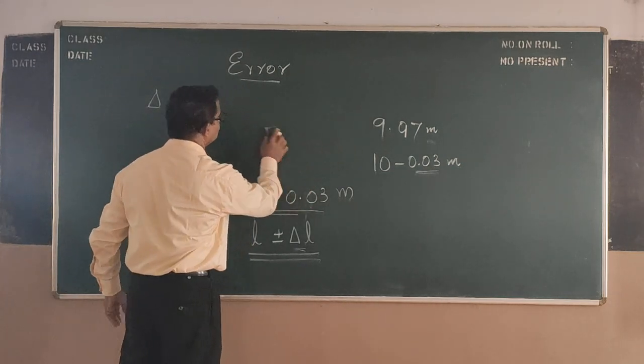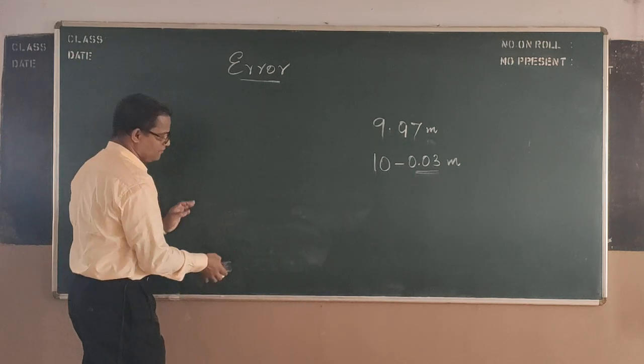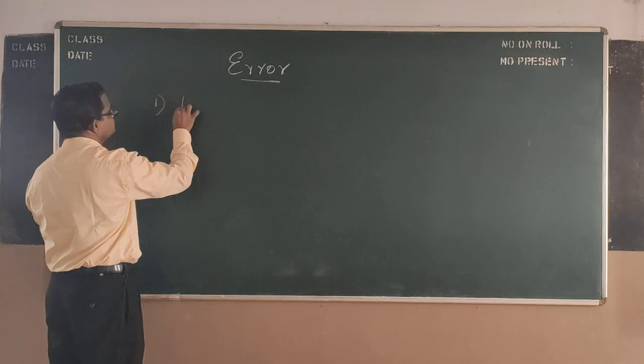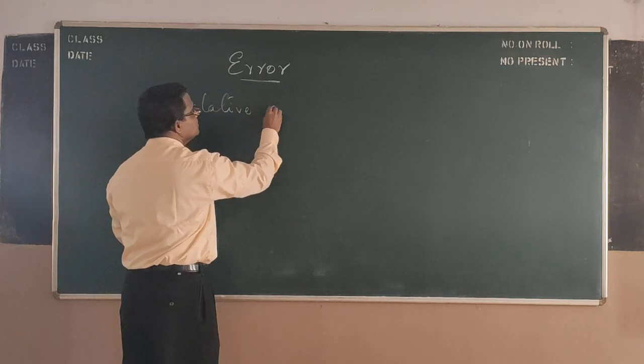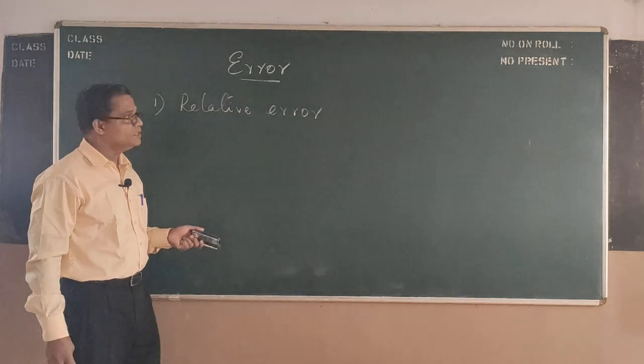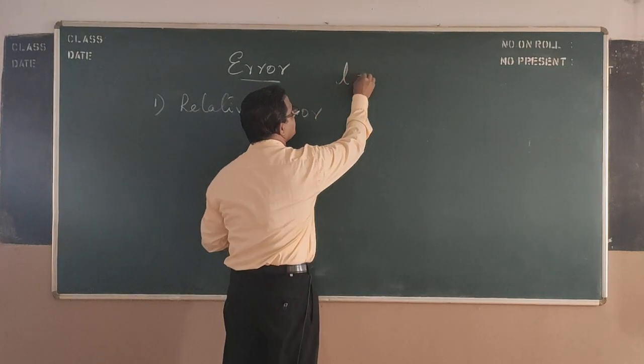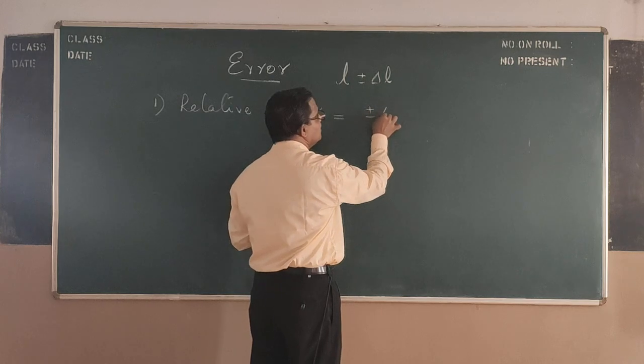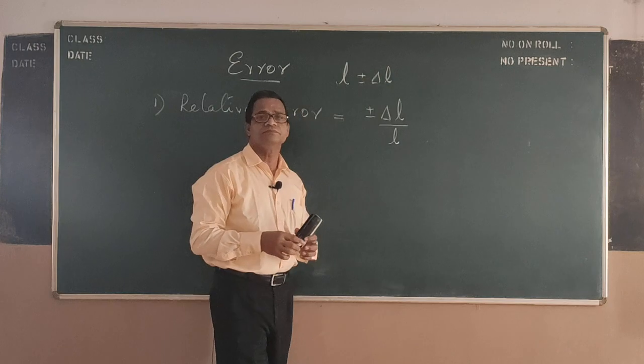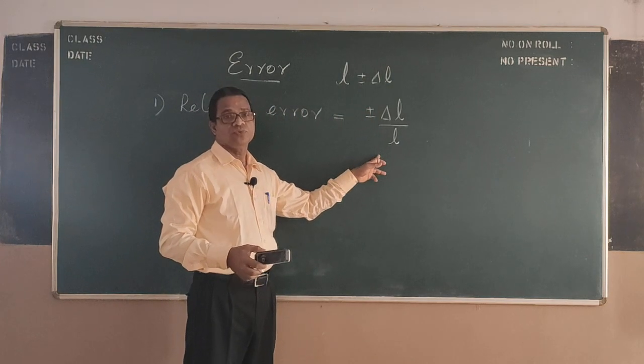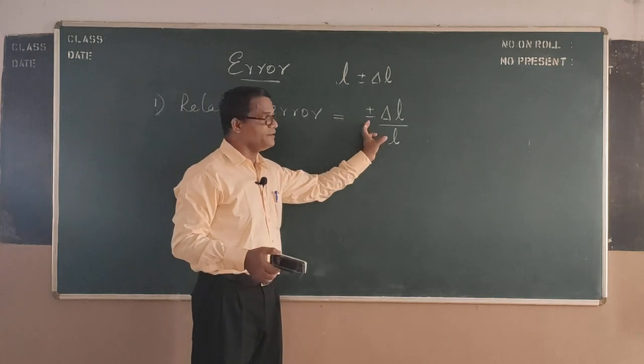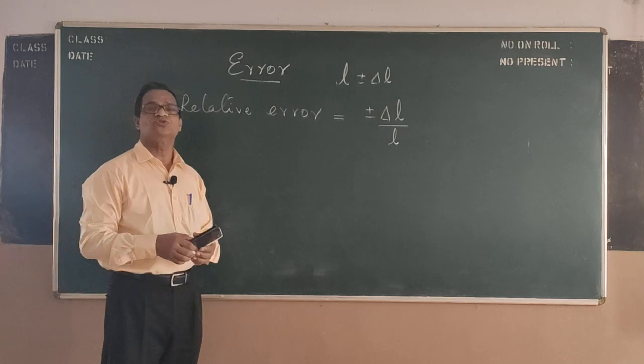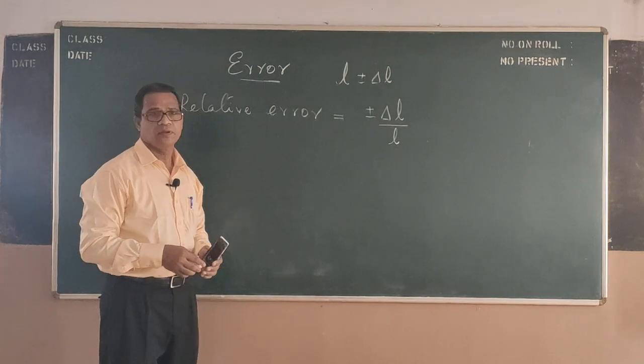Now relating to error, we have two more definitions. One is relative error. What is relative error? If you measure the length as L plus or minus delta L, then this relative error is mathematically represented as plus or minus delta L by L. That is error in the measurement divided by actual value. This quantity refers to relative error, meaning error related to the actual value.